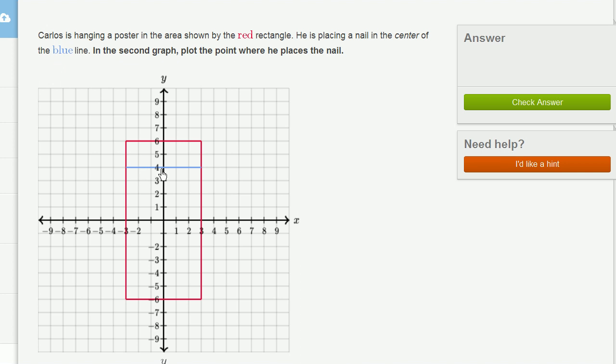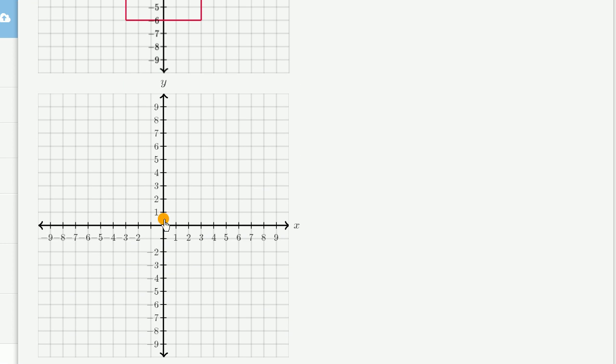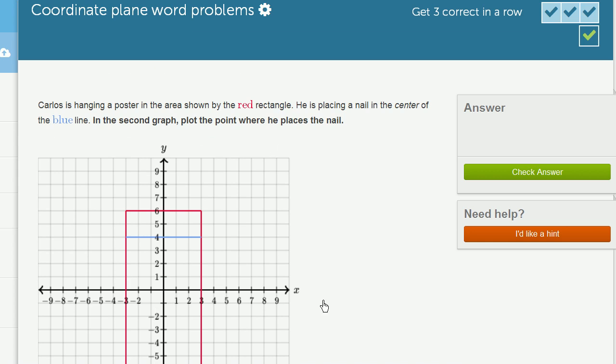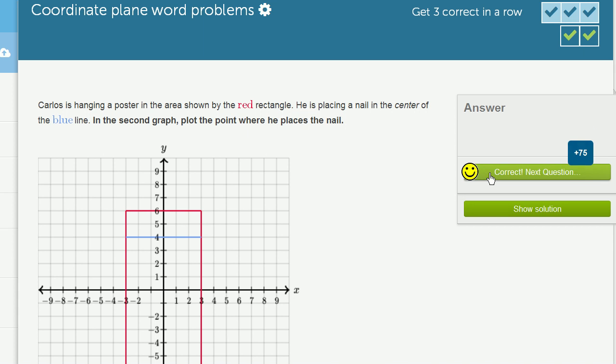That's 3 to the right, 3 to the left. So he wants to plot, he wants to put the nail at the point x equals 0, y is equal to 4. So he wants to put it at x is equal to 0, y is equal to 4. That's this point right over here. So let's check our answer. Let's do one more.